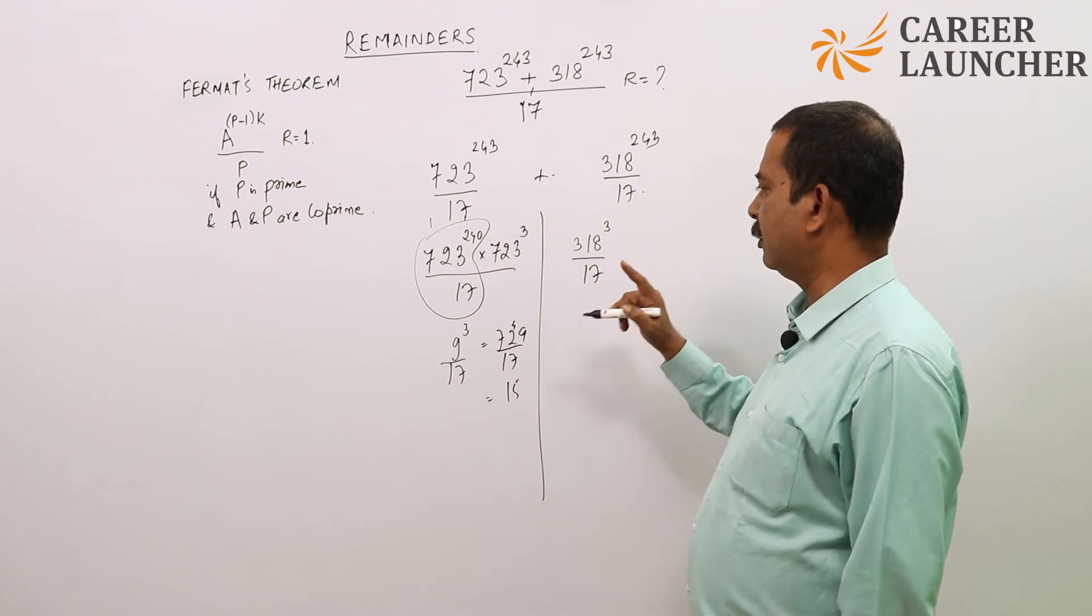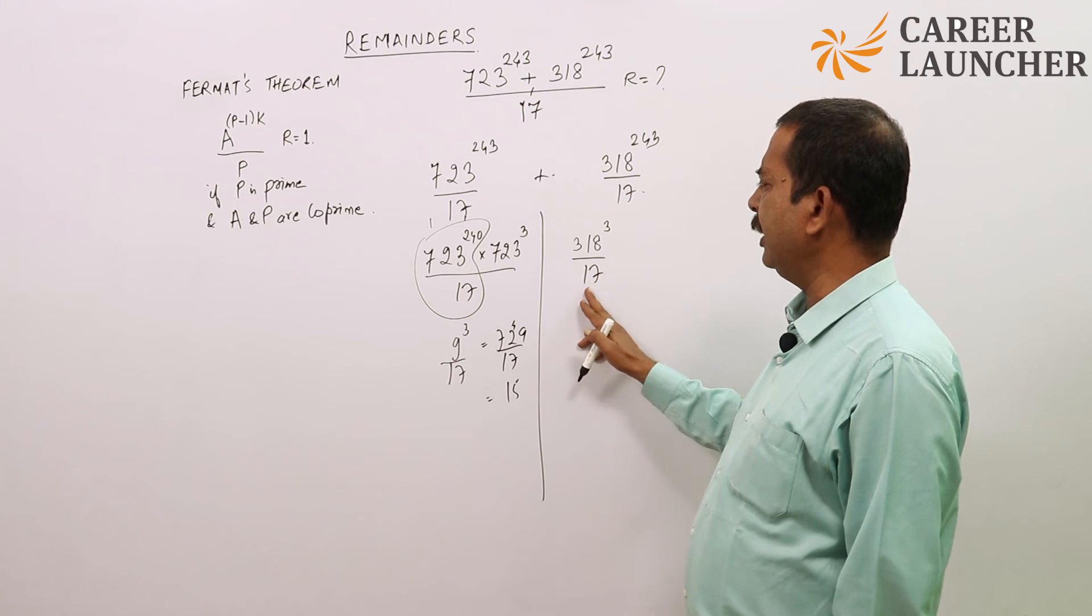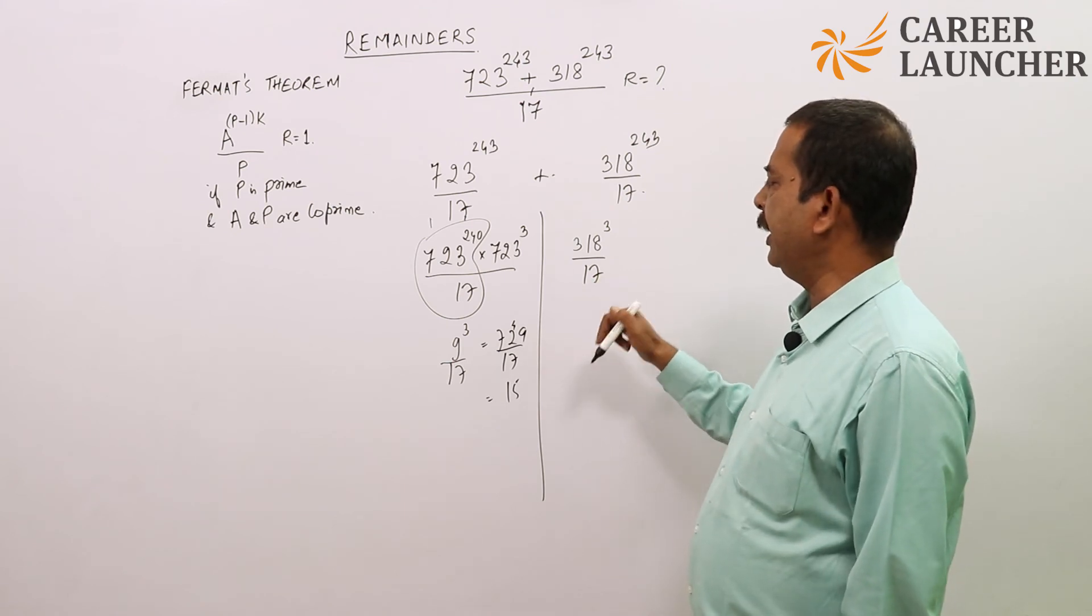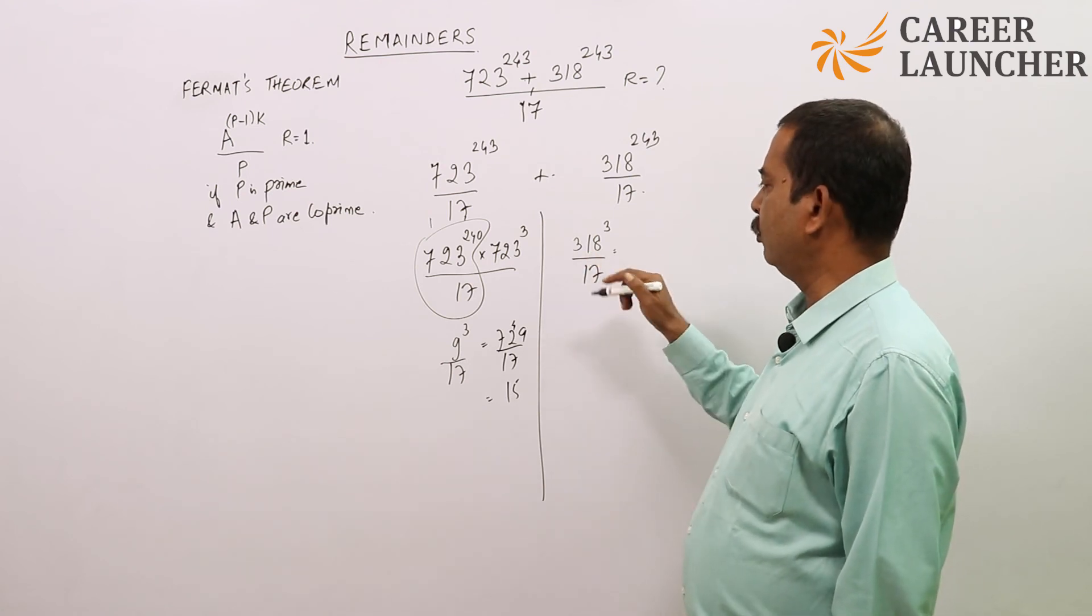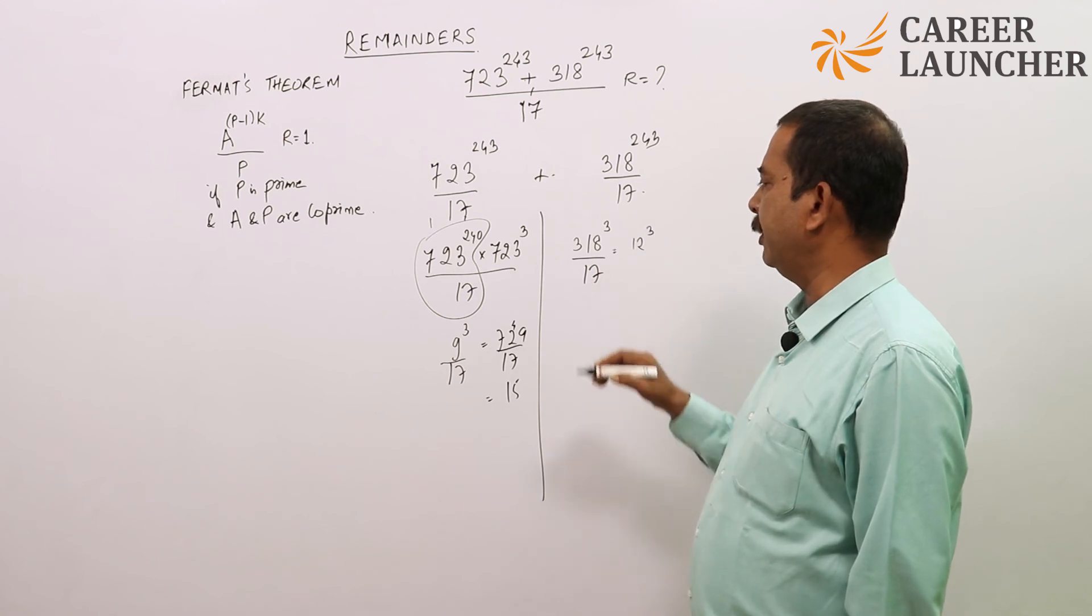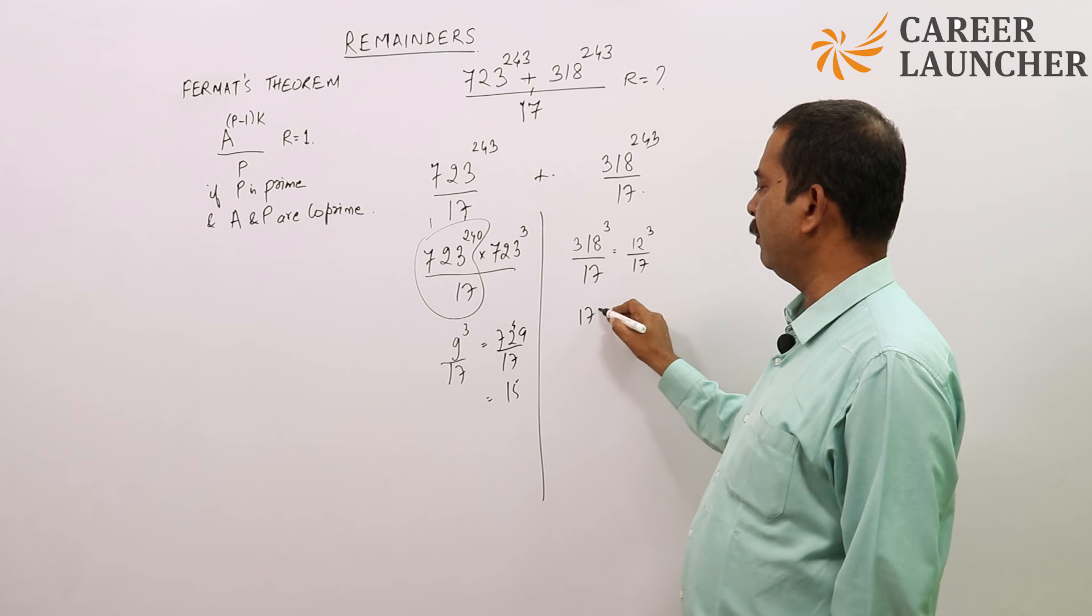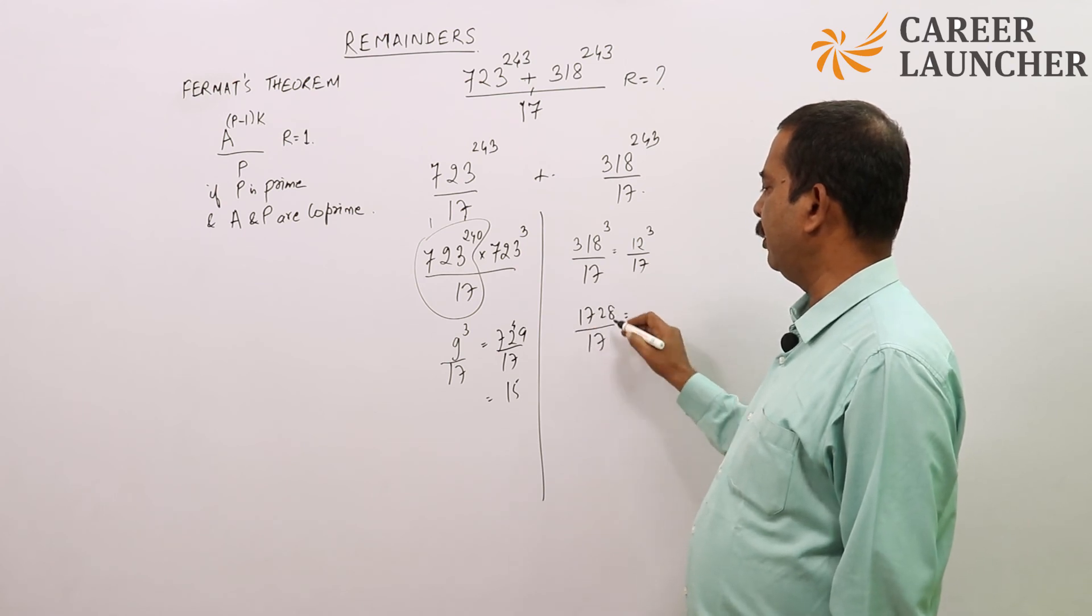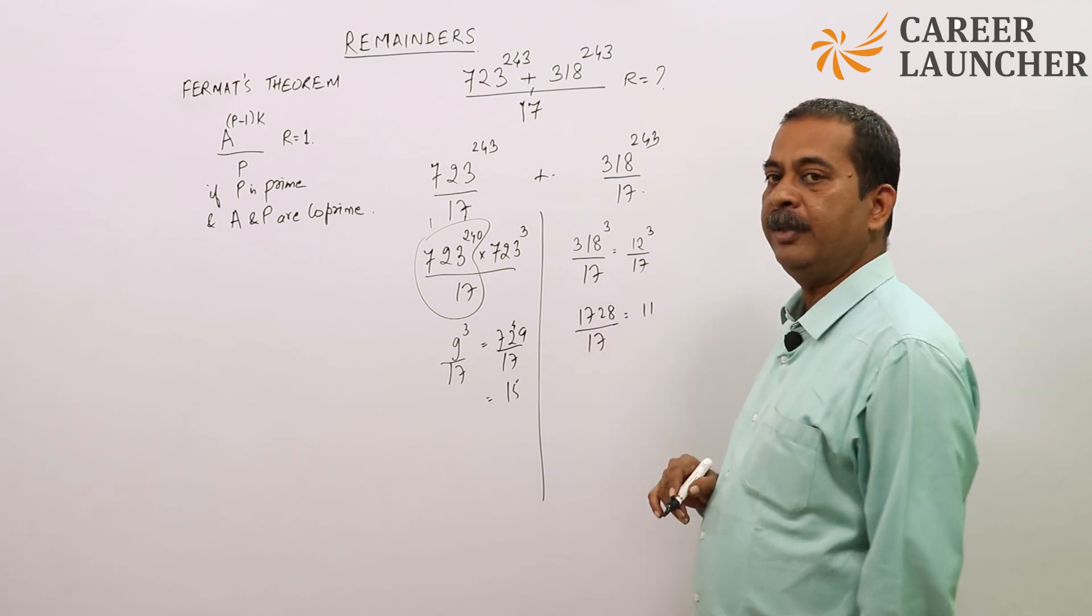I have to divide this. 17 and 318, if I take 17 into 18 it will be 306. When I do 306, I will be getting 12 cube as the remainder divided by 17. Now 12 cube is 1728 divided by 17, the remainder will be 13. If I divide this, remainder comes out to be 11.